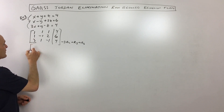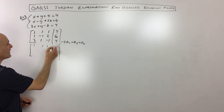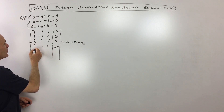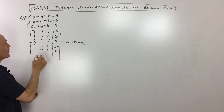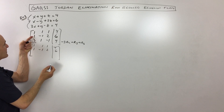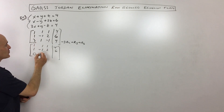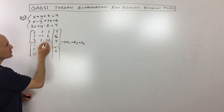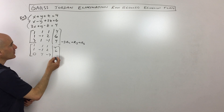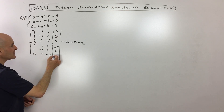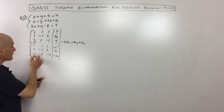So I'm going to rewrite the first row since it's not changing, and the second row is not going to be changing either. But the third row is — so we're taking negative 3 times row 2 plus row 3: that gives us 0. Negative 3 gives you 3 plus 1 is 4. Negative 3 times 2 is negative 6 plus negative 1 is negative 7. Negative 18 plus 4 is negative 14. So now we've got 0 in this lower left-hand corner.